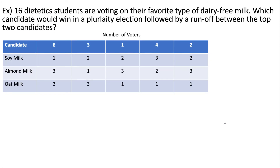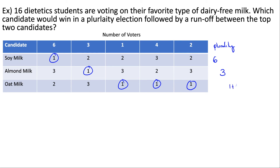Let's look at one more example. We have 16 dietetic students voting on their favorite type of dairy-free milk. Which candidate would win in a plurality election followed by a runoff between the top two candidates? Try to pause and solve it yourself first. For the plurality portion: six voters ranked soy milk first, three voted for almond milk, and one, four, and two voters all ranked oat milk first. Tallying up: soy gets 6, almond gets 3, and oat gets 7.